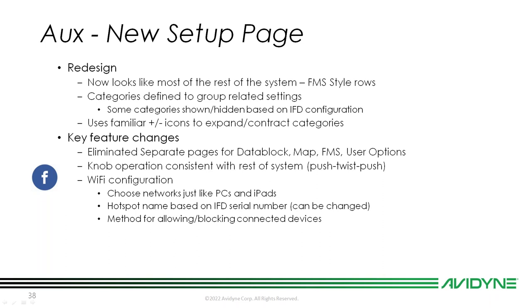The knob operation is now consistent with the rest of the system: push, twist, push. Previously in user options in 10.261 you'd use the right knob to scroll and the inner knob to change your selection, but that didn't match the rest of the system. Now everything is streamlined. We also improved the Wi-Fi configuration — that's a really big change.